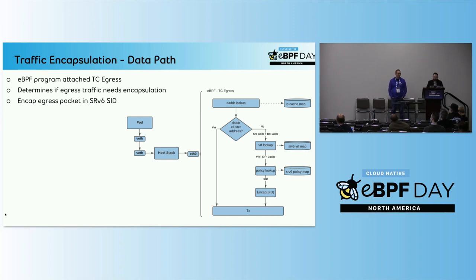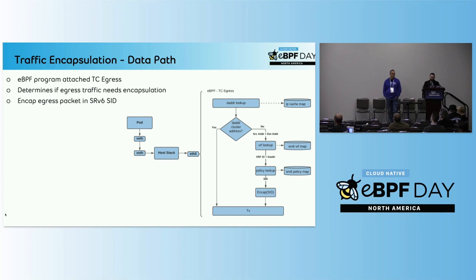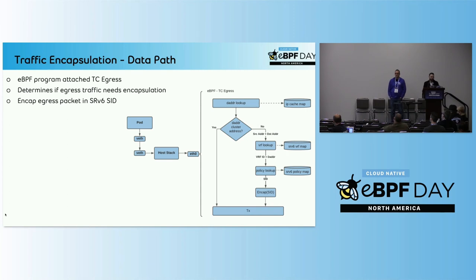Let me go through the actual logic flow of what happens when SRV6 traffic is egressing. We perform a lookup into the IP cache map — a mapping of IP addresses that Cilium knows about, giving us metadata. For instance, it will tell us whether the destination address is in our cluster or not. If it's not in our cluster, we go the encap path. From there, the traffic does a VRF lookup, taking the source IP address and destination address and looking up the VRF ID. We then take the VRF ID along with the destination address and do a lookup in the policy map. The policy map provides the SID, encapsulates the traffic, and the SRV6 SID becomes the outer packet, with the inner packet being the original pod traffic.